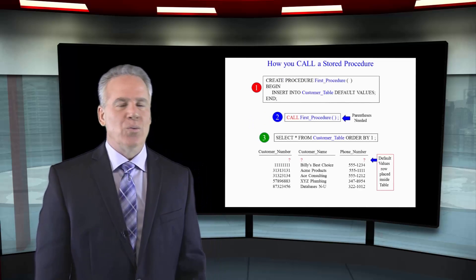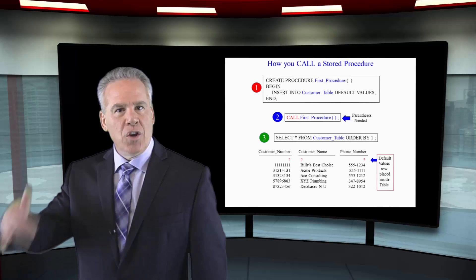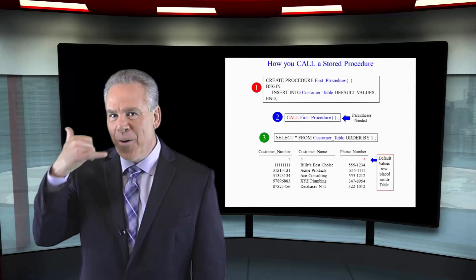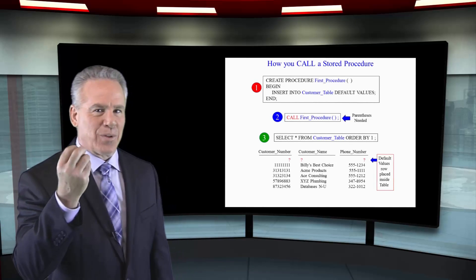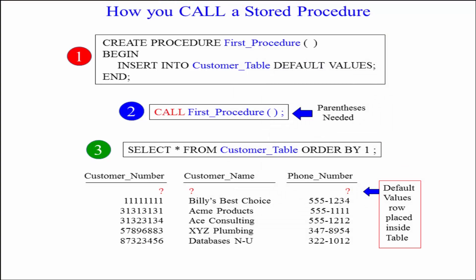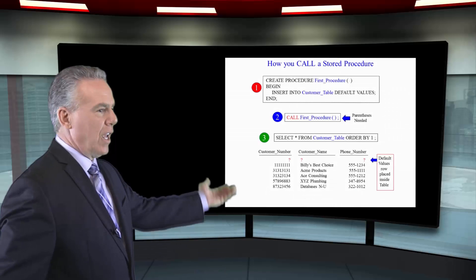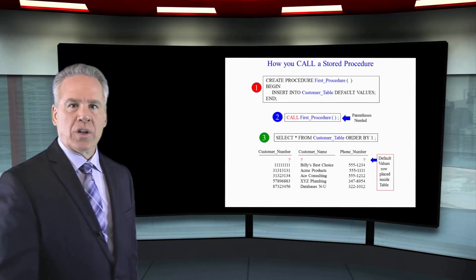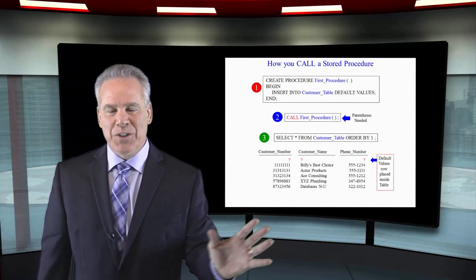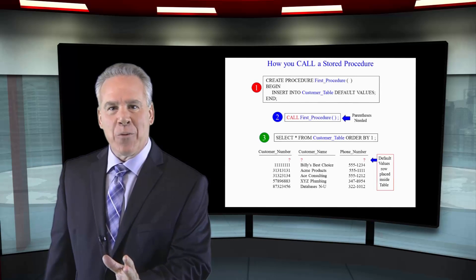When you want to run a procedure, you call it — that's the key. You always call a procedure. As you can see here, we've created our procedure in step one. Then we call 'first_procedure', and once again you will always have the open paren and close paren. The procedure runs, and then you can select everything from your customer table to check. Notice the first row has nothing but default values that were null.